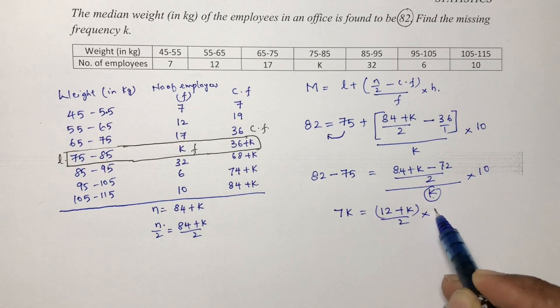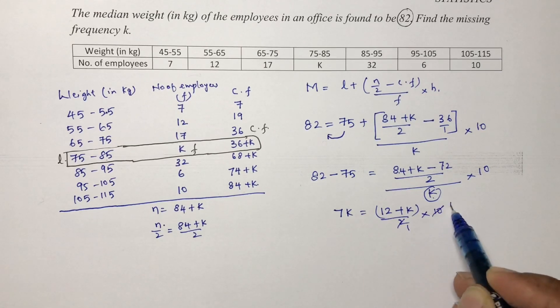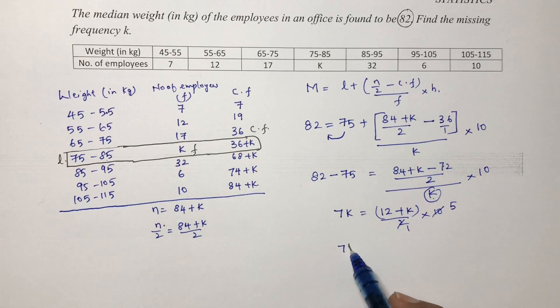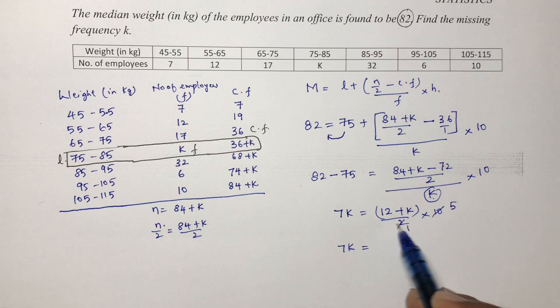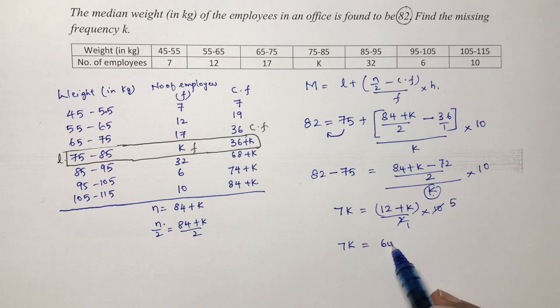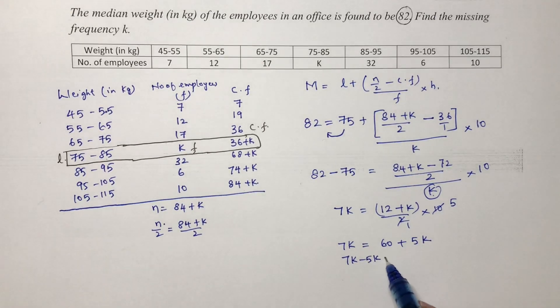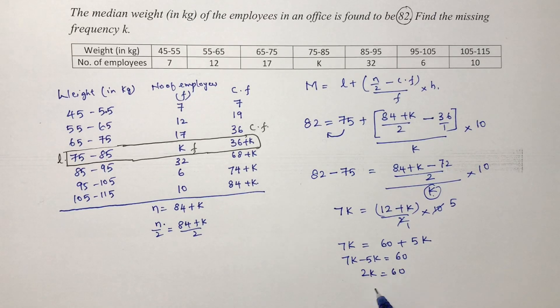2 by 2 by 2 into 10, 2 times 5. 7k equals 12 times 5 is 60 plus k into 5 is 5k. So 7k minus 5k equals 60, 2k equals 60, k equals 60 by 2. So k value is 30. Therefore the value of k is 30.